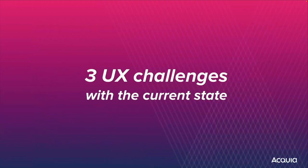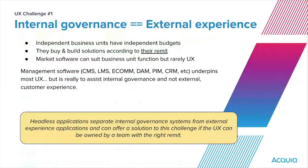There are three UX challenges with that current state. Number one: your internal governance equals your external experience. An organisation has independent business units with independent budgets, and they buy and build solutions according to their remit. When they go to market and buy a piece of management software, they buy within what that tool can do for them. The user experience becomes a byproduct of that purchasing decision, so we end up with lots of different software silos and customers have to jump from one management system to another to get a holistic experience.